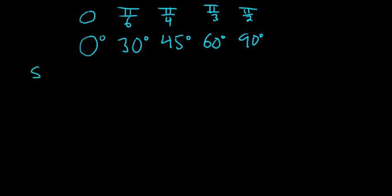Alright, so now we're going to do sine of theta, and then below it I'll do cosine of theta. Basically you just start with the numbers. Start with the number 0. So you do square root of 0 over 2, square root of 1 over 2, square root of 2 over 2, square root of 3 over 2, square root of 4 over 2.